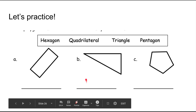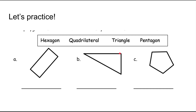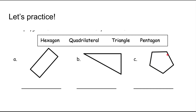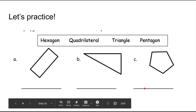B should be easy. Let's count the angles first: one, two, three. This has three angles. Let's count the sides: one, two, three - and three sides. For shape C: one, two, three, four, five angles. And let's count the sides: one, two, three, four, five sides. A hexagon has six and a pentagon has five. So below C we would write pentagon. Good work.